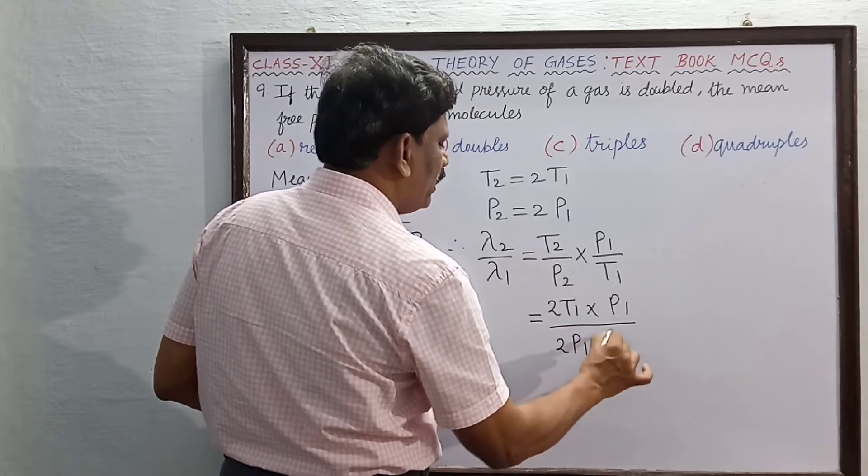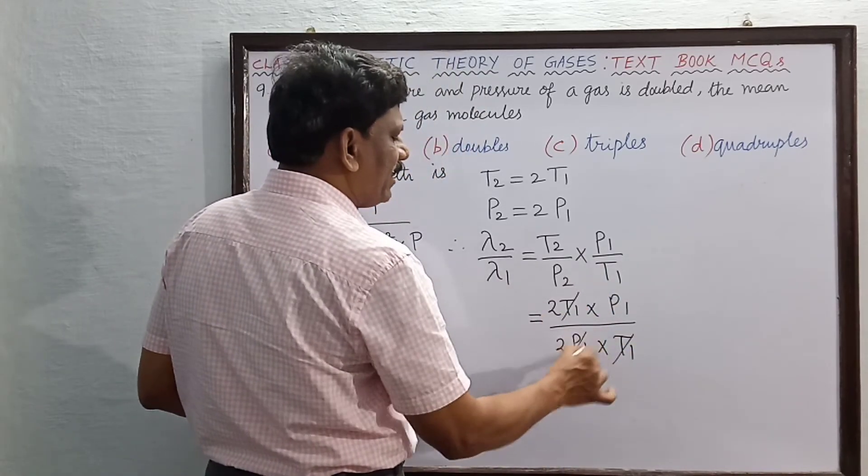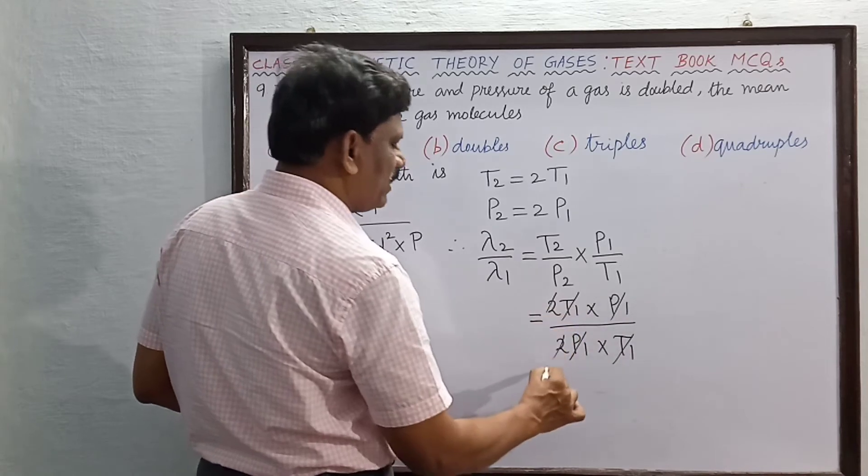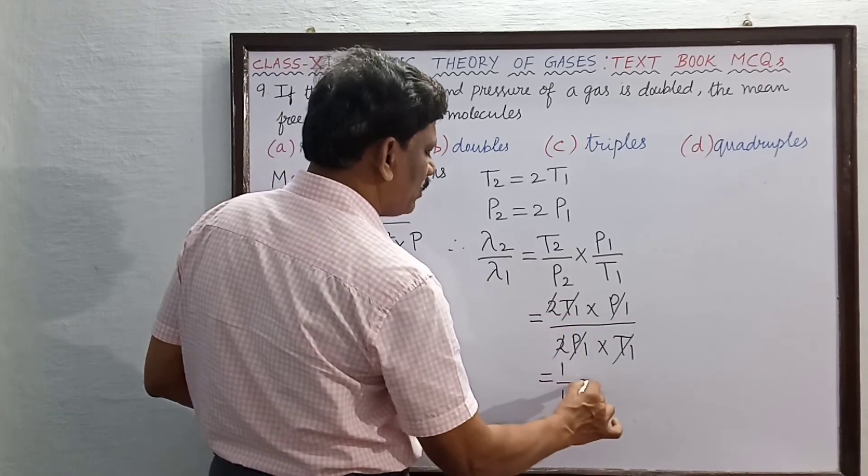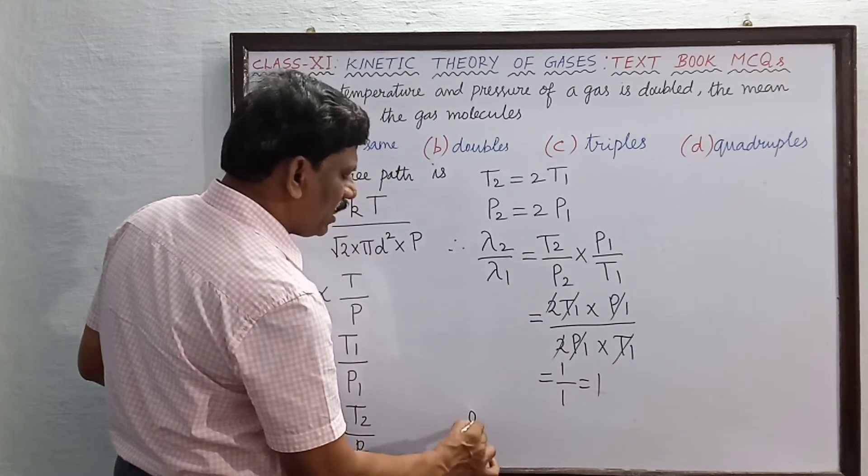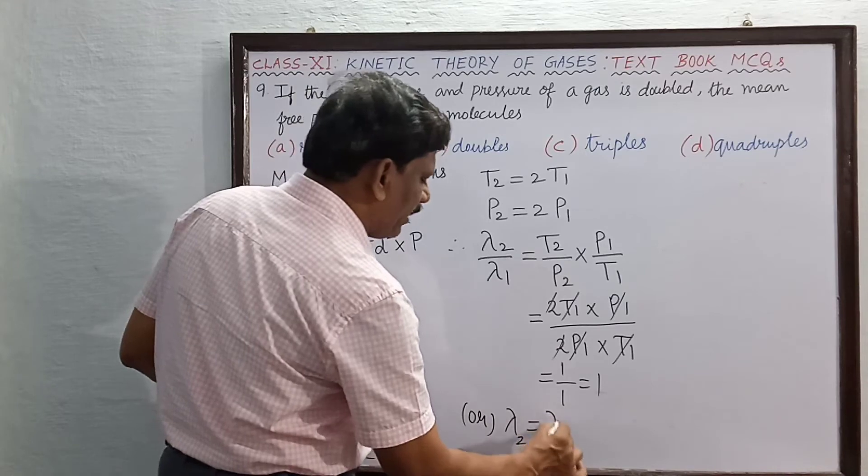Temperature T gets cancelled, pressure also gets cancelled, so this is equal to 1. 1 by 1 is 1 only, so lambda 2 is equal to lambda 1.